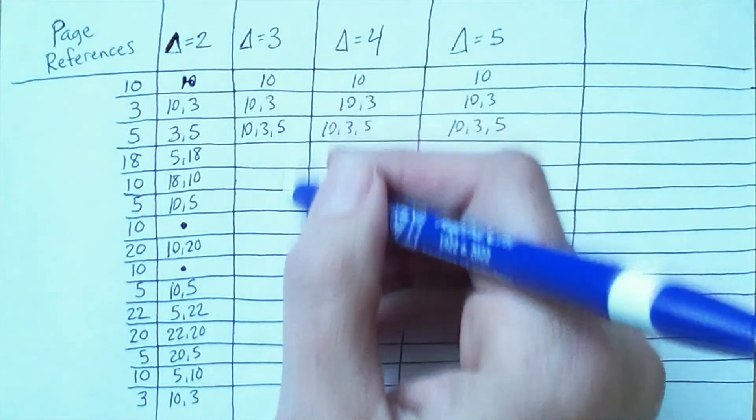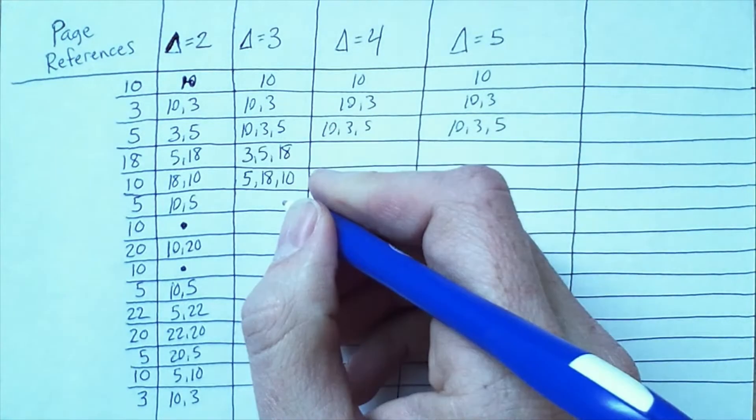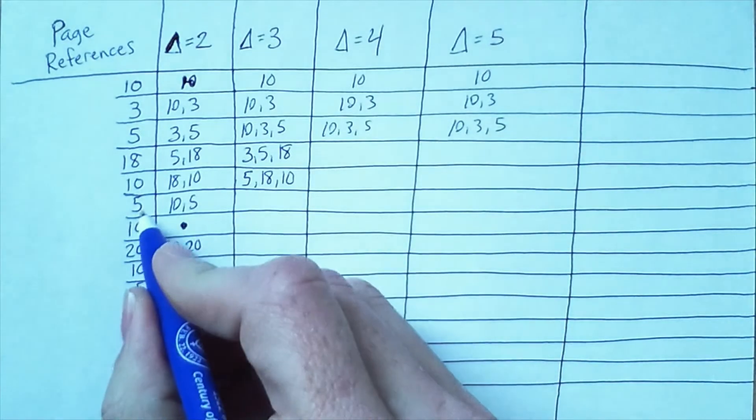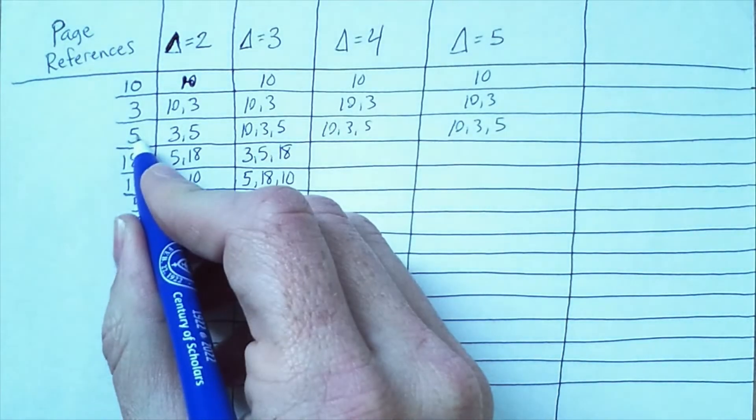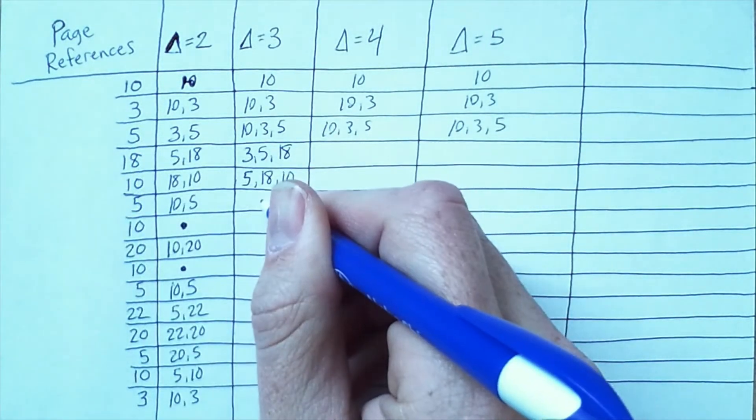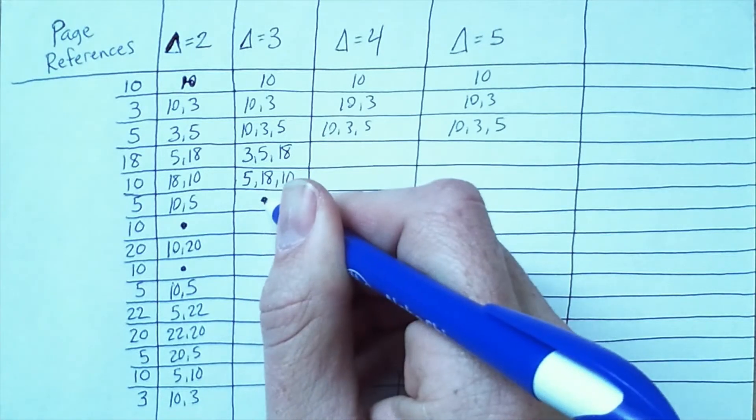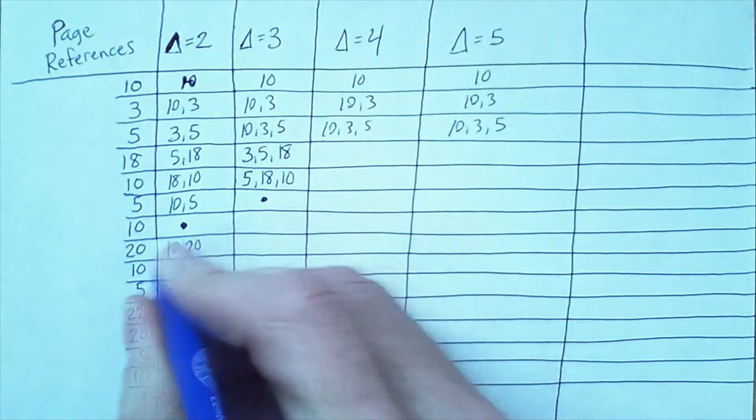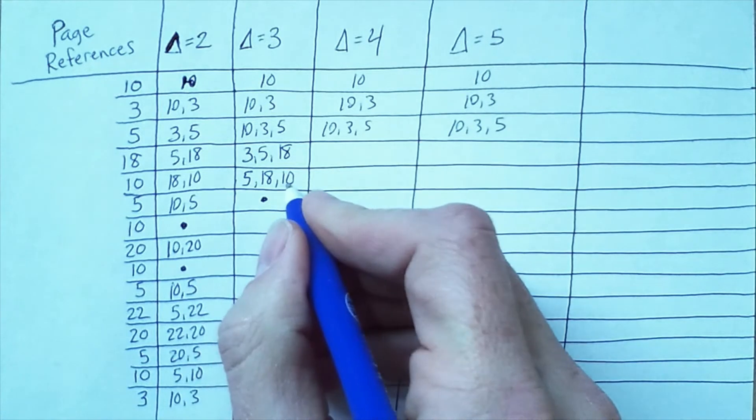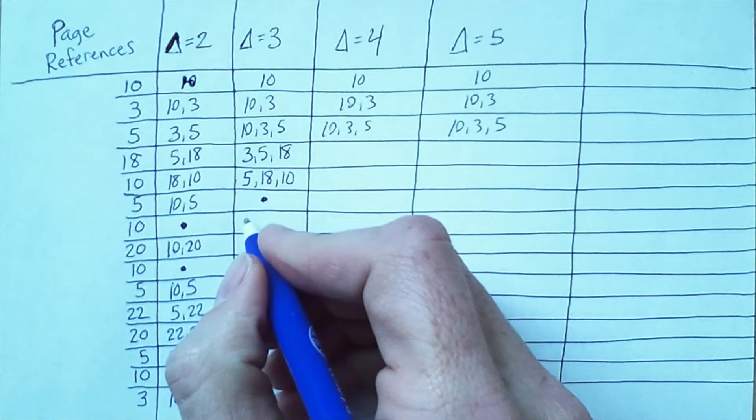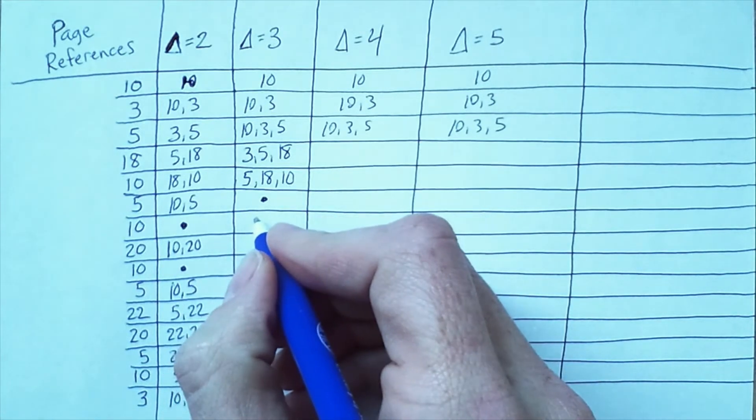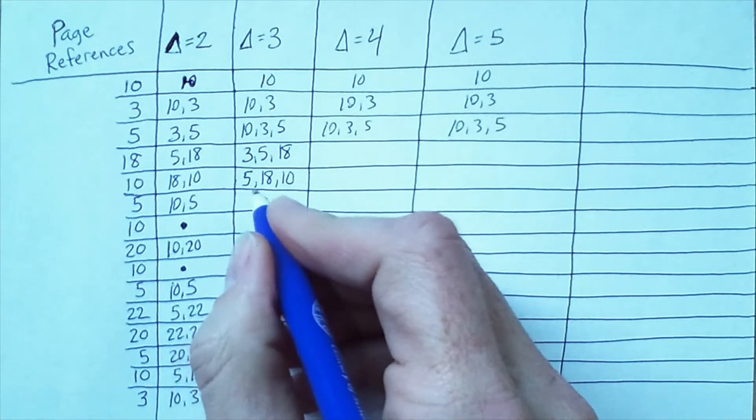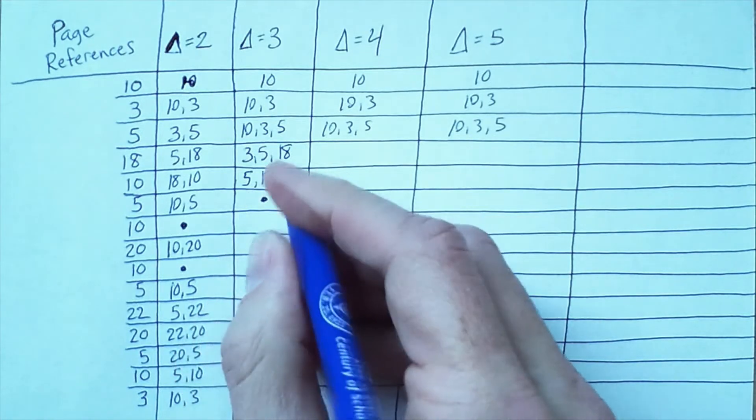But then it's the same again because we add 10, 20, 10. So 10 and 20 are still the members of our working set. This is relevant because if we're using the working set as a basis for managing the resident set.